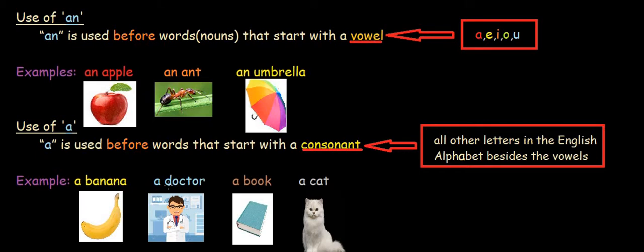Doctor. It starts with the consonant d. So, we can say a doctor. Book starts with the consonant b. So, we can say a book to refer to one single book. Cat. It starts with the consonant c. So, we can put a before that as well.